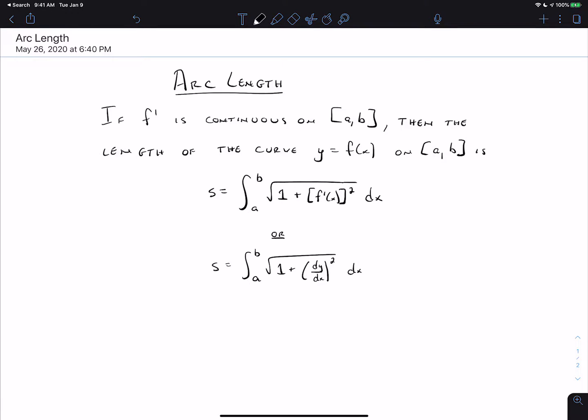This is a short video on arc length. The arc length formula says that if f prime, the derivative of a function, is continuous on the closed interval [a,b],